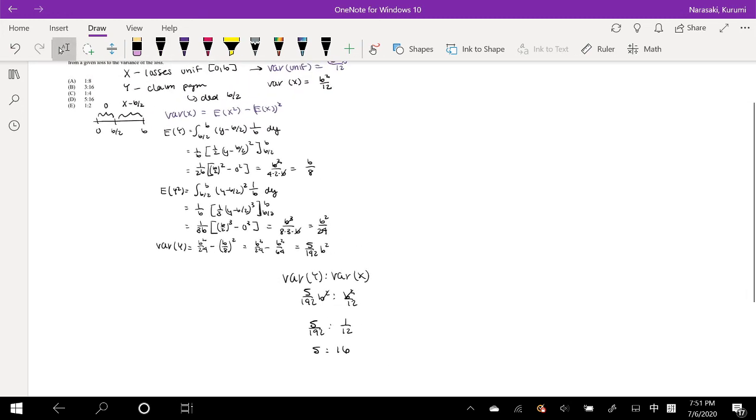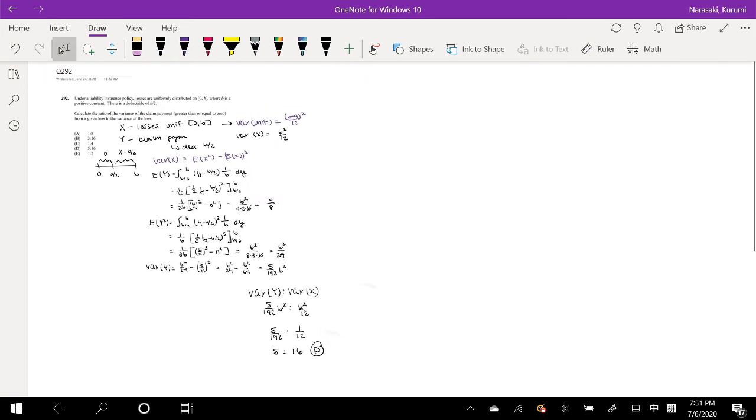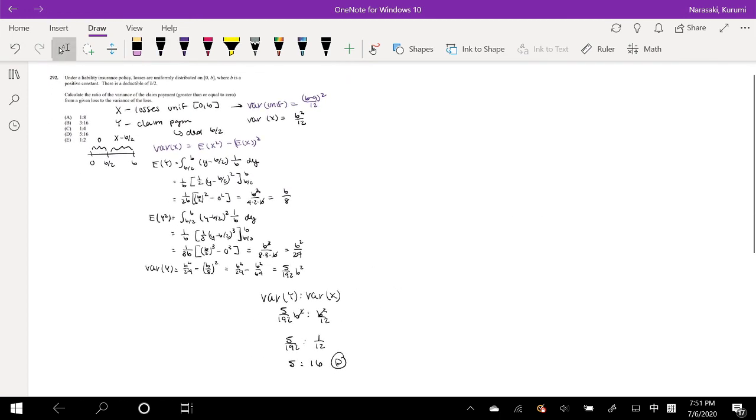So I'm going to multiply this by 12 on each side, and we get 5 over 16 is our ratio, which is our answer, D. If you guys have any questions, feel free to leave them down below. Otherwise, make sure you like, subscribe, and share. Bye!